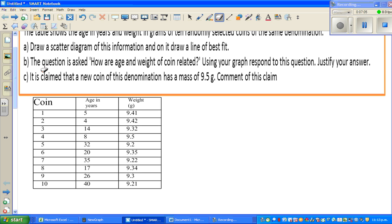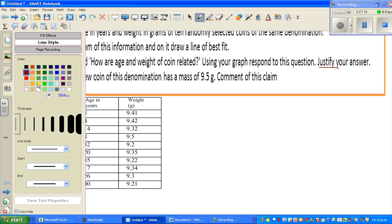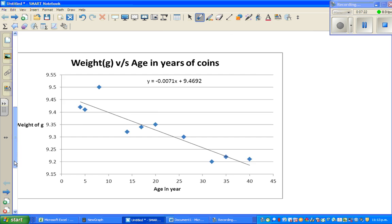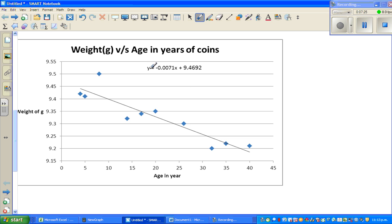Question B. The question is asked how are age and weight of coin related. Use your graph to respond to this question. Justify your answer. So let us look at the graph. So this is the line of best fit and the equation of the line is. So let us write the equation in a slightly easier way. This is negative 0.007x plus if we round it to 1 decimal place it is 9.5. So this is the equation of the line.